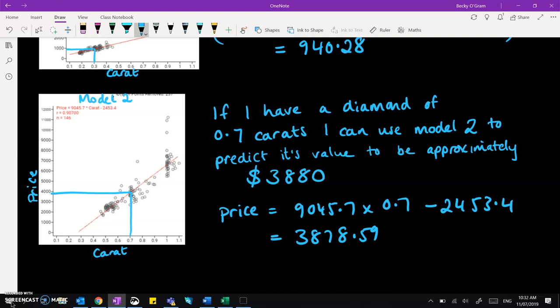You wouldn't go to any more accuracy than you've been given in the dataset. You'd probably go one significant figure less than the original dataset, if not maybe a little bit less. Your predictions are an estimate, so you shouldn't be too specific on your values. It wouldn't be sensible to predict $3,878.59, for example. That's being too specific on a prediction that's not going to be absolutely 100% spot on anyway.